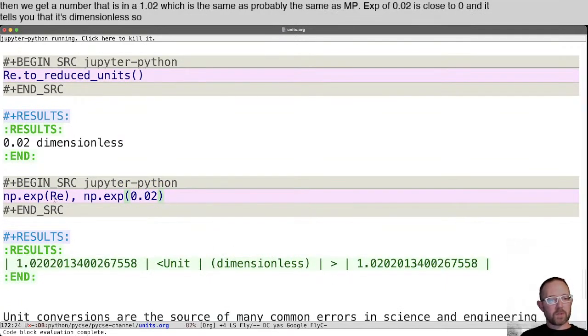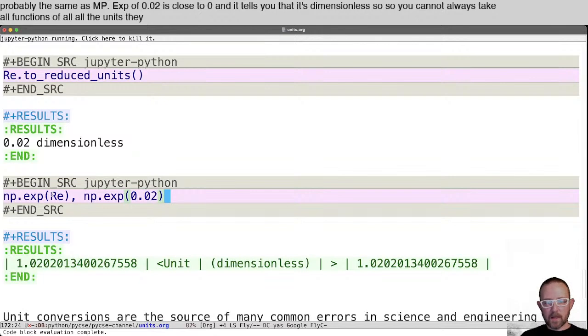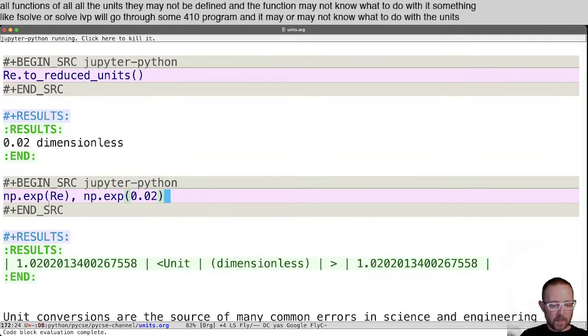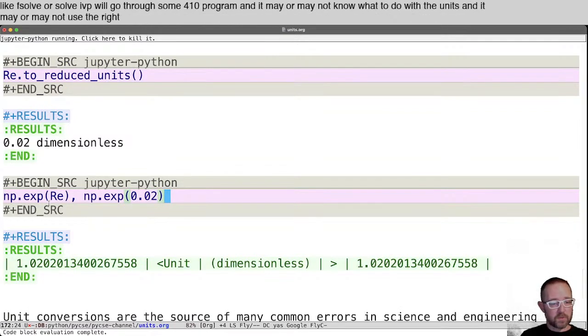So you cannot always take all functions of all all units. They may not be defined and the function may not know what to do with it. Something like F solve or solve IVP will go through some Fortran program and it may or may not know what to do with the units and it may or may not use the right values and it may or may not return the units for you.